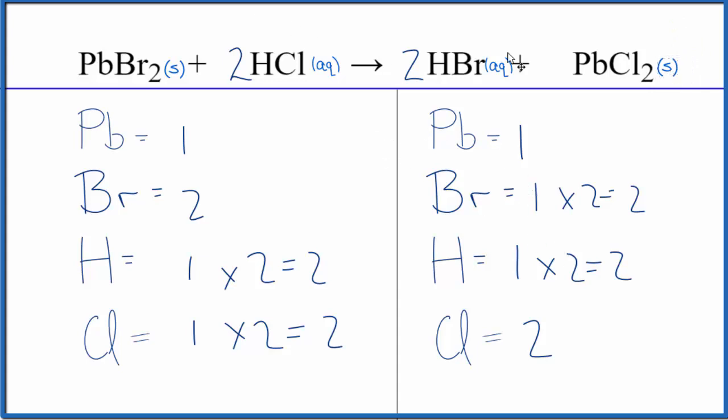So those are our states, and this is the balanced equation for PbBr2 plus HCl. The type of reaction is double displacement. This is Dr. B. Thanks for watching.